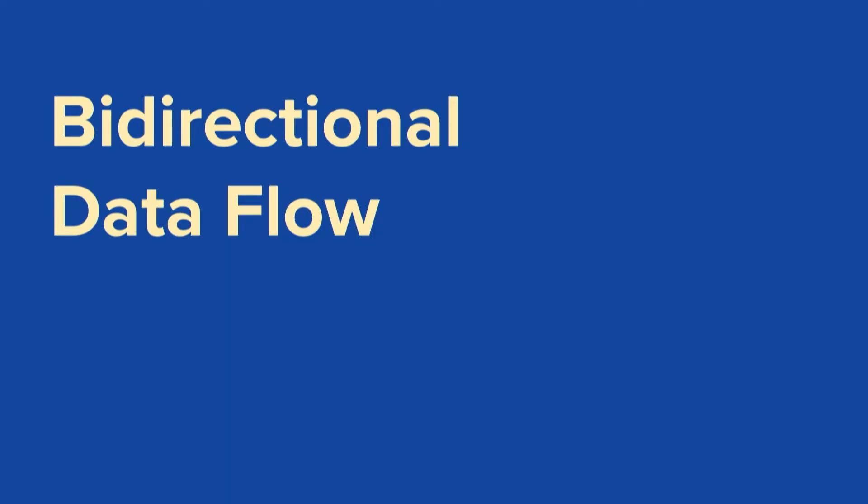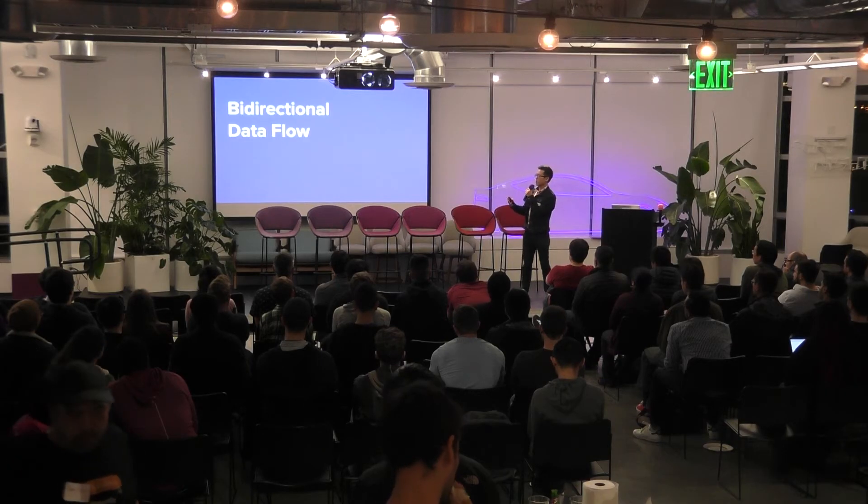Now let's think about what it would look like to manage the data flow in this feature with a bidirectional data flow. In a bidirectional data flow, the application maintains state in two different layers, both in the view and in the model. Our application might achieve this through a framework like data binding, or some kind of custom solution.